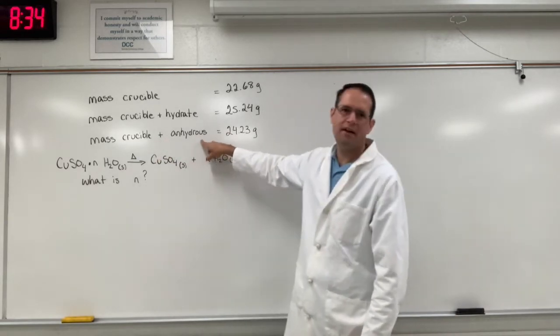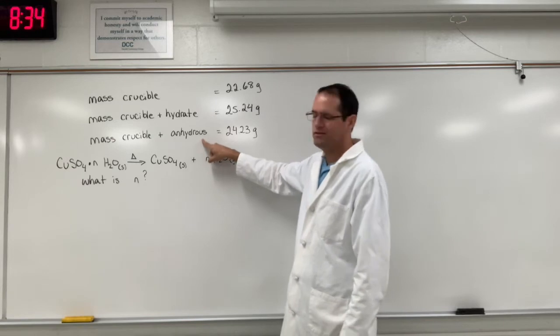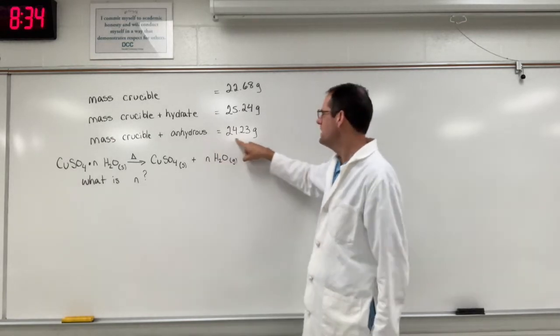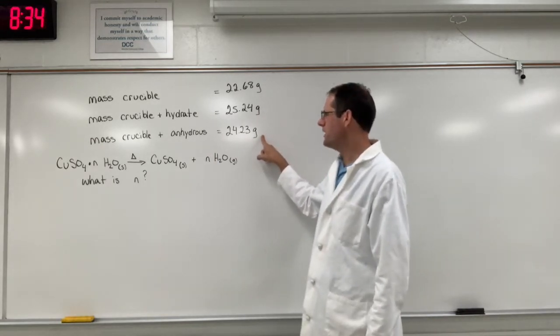And then the mass of the crucible and the anhydrous. Anhydrous means without water or dry. It's after we heated it and the water was removed. And the mass went down about a gram to 24.23 grams.